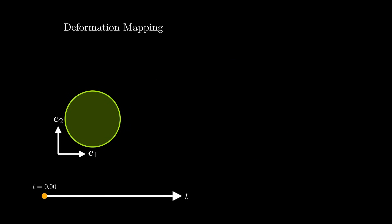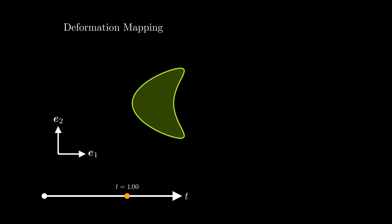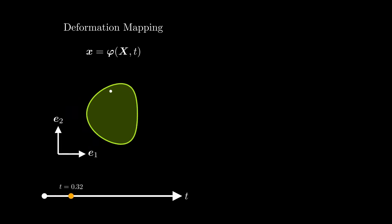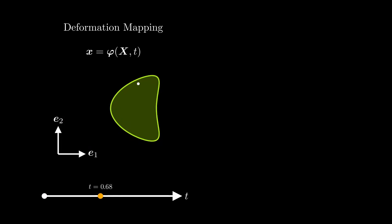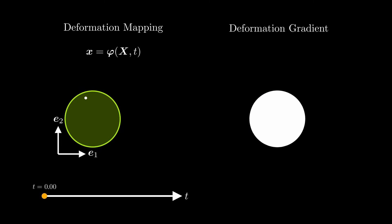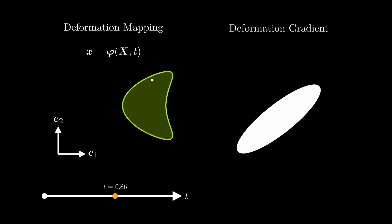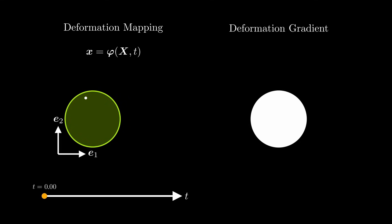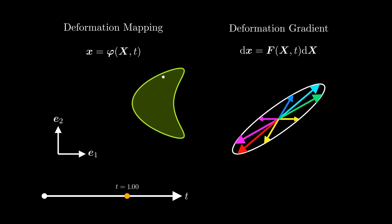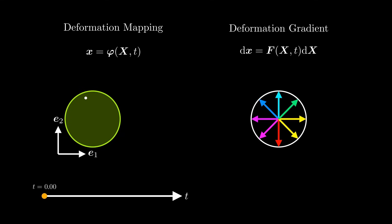In a previous video I explained how the deformation of objects can be described mathematically. Here is a short summary. We introduced the deformation mapping phi, which is a function that takes a point in the undeformed object capital X and the time t as input and returns the deformed point lowercase x. Afterwards we studied the deformation gradient F. If we consider an infinitely small volume element at a specific point, the deformation gradient tells us how this infinitesimal element is deforming over time. Specifically, F gives us the deformed line elements d lowercase x when multiplied with the undeformed line elements d capital X.